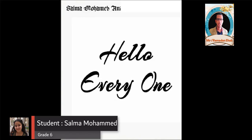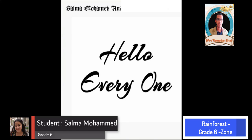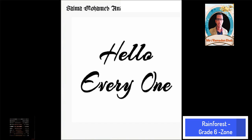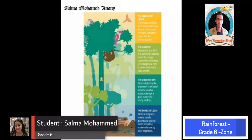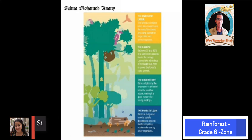Hello everyone, my name is Sanu Muhammad Alania. I'm a student at Future Academy and my teacher is Mr. Ronald. Today I will talk about each layer in the forest. We should know that the forest has four layers: the emergent layer, the canopy layer, the understory layer, and the forest floor layer.